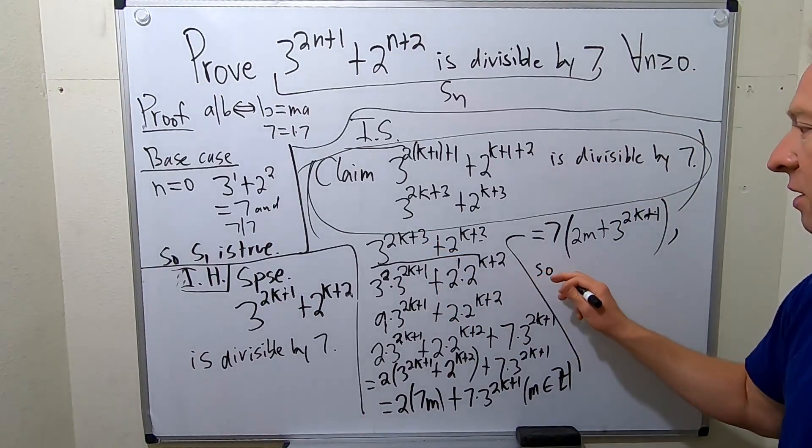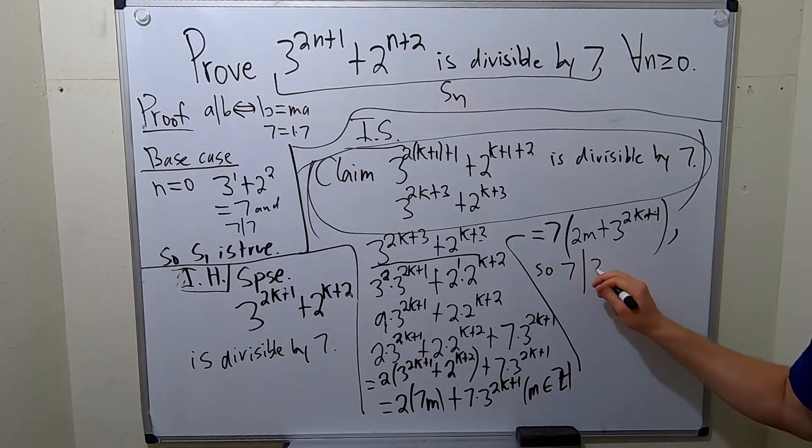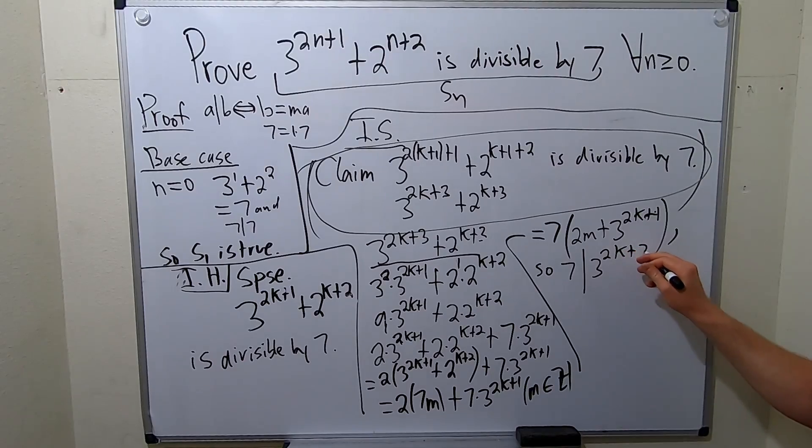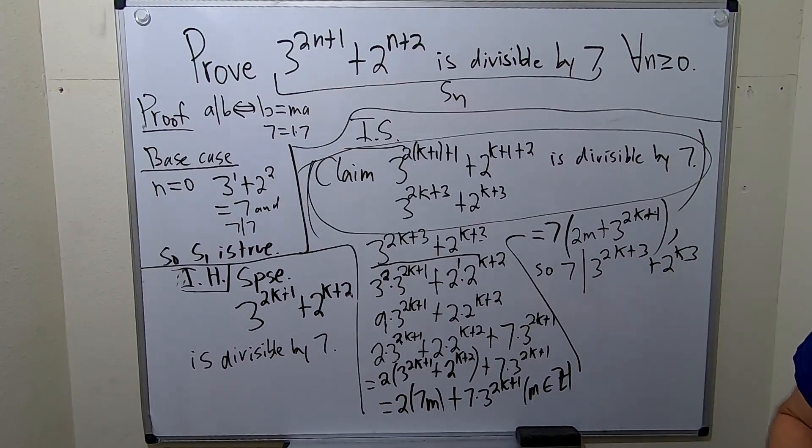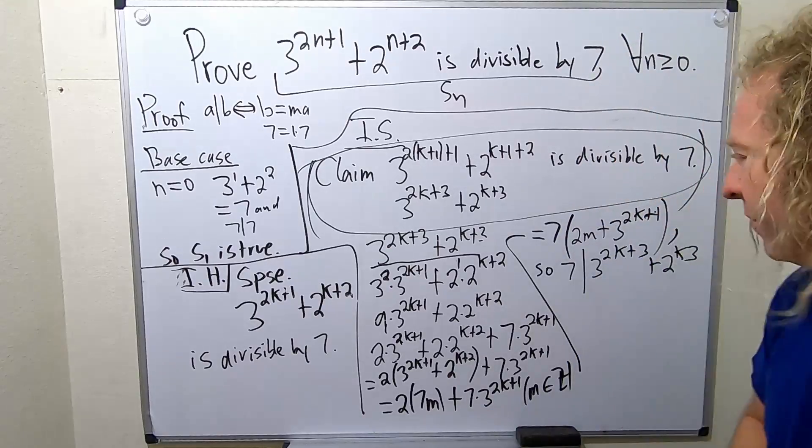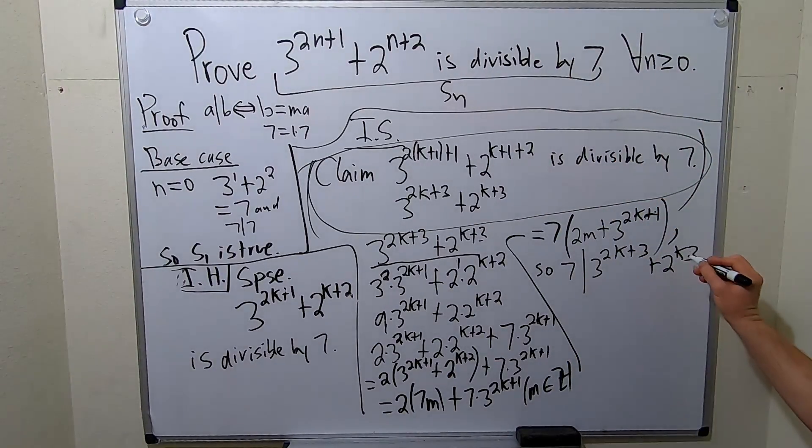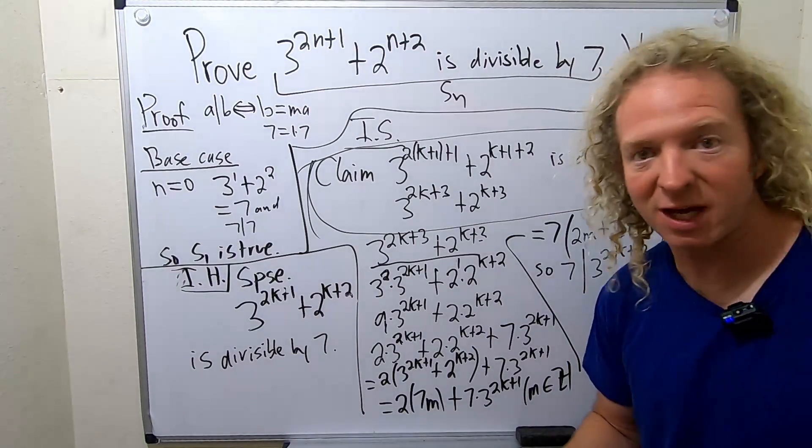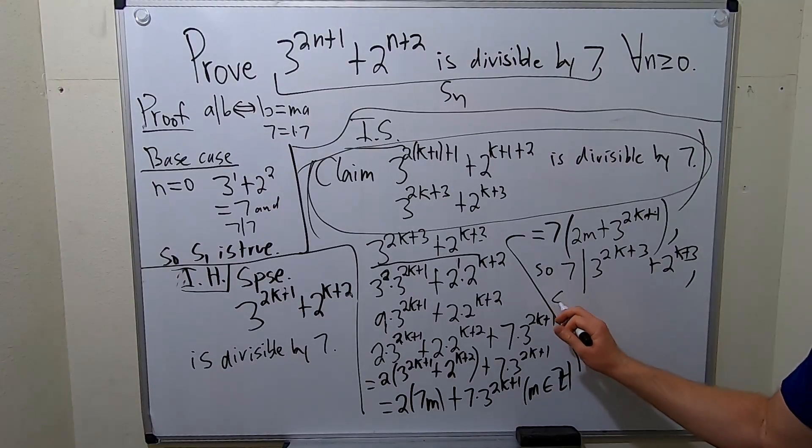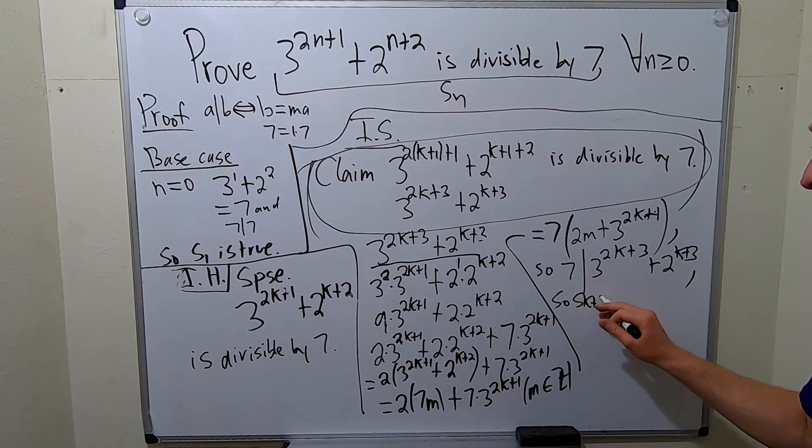So this means that 7 divides 3 to the 2k plus 3 plus 2 to the k plus 3. And that's exactly what we had to show. So s sub k plus 1 is true.